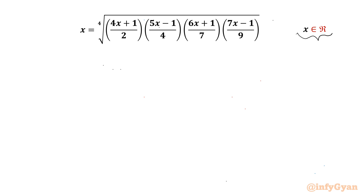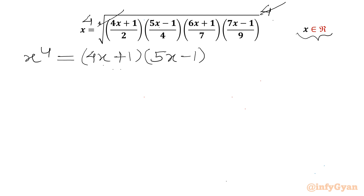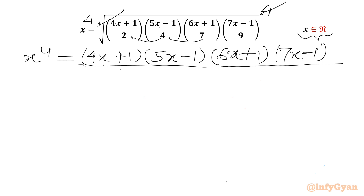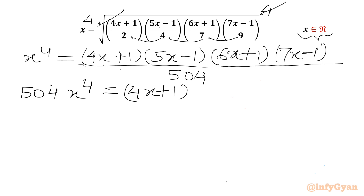Let us get started by considering power 4 both sides. We can cancel the 4th root with power 4 on the RHS. So we can write x power 4 will be equal to (4x+1)(5x-1)(6x+1)(7x-1) over 2 times 4 is 8, 8 times 7 is 56, 56 times 9 is 504.